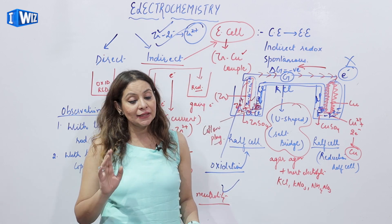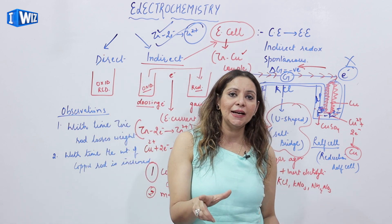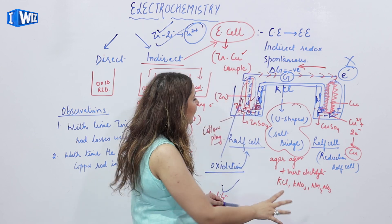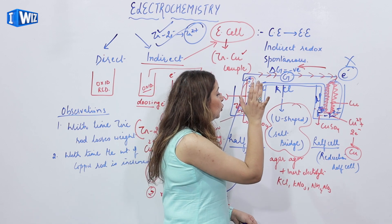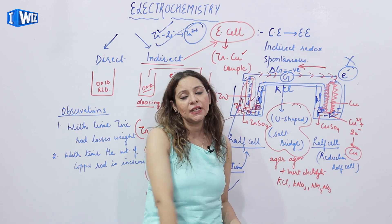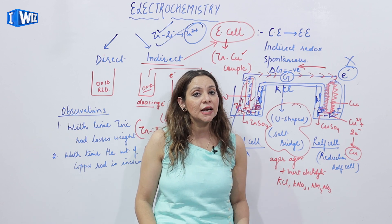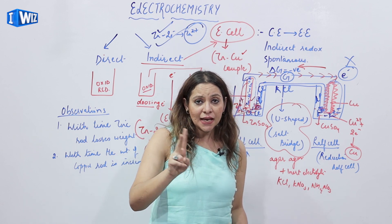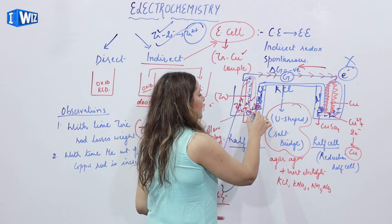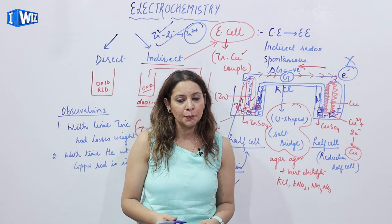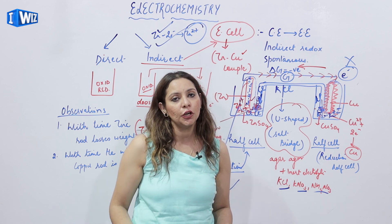Regarding the inert electrolyte used in the salt bridge: it must not disturb or interfere with any reactions occurring in either beaker. Additionally, an important condition is that the cations and anions of the electrolyte should be of similar size, so their diffusion tendency — the rate of diffusion — is approximately the same. That is why only certain selected electrolytes like KCl, KNO₃, or NH₄NO₃ are used with agar-agar to form a salt bridge.